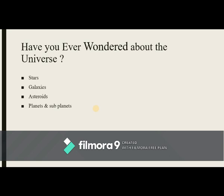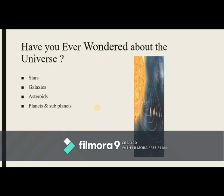Have you ever wondered about the universe and what it is made up of? It is made up of many things like stars, galaxies, asteroids, planets, and sub-planets. Planets like Mercury, Venus, Earth, Mars, Jupiter, Uranus, and Neptune are all in one solar system, as we all know. The main source of power is the Sun, which is the biggest star.